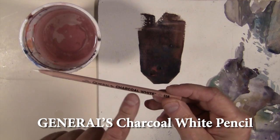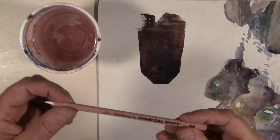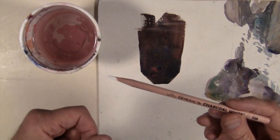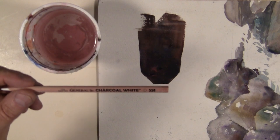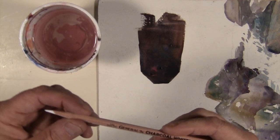The Generals charcoal white pencil. They showed me this little trick you can do when you're using watercolor and you want to get a white line against some of your watercolor. It's not the traditional way of doing watercolor, but this is if you want to get a nice thin line.